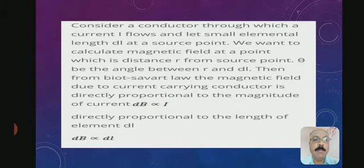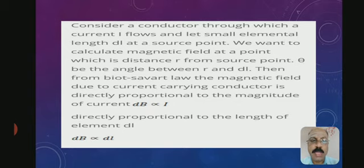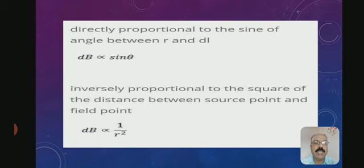The magnetic field dB produced around the conductor is directly proportional to the magnitude of the current I. It is also directly proportional to the length of the element DL, and directly proportional to sin of the angle theta between R and DL. It is inversely proportional to the square of the distance R between the source point and the field point.